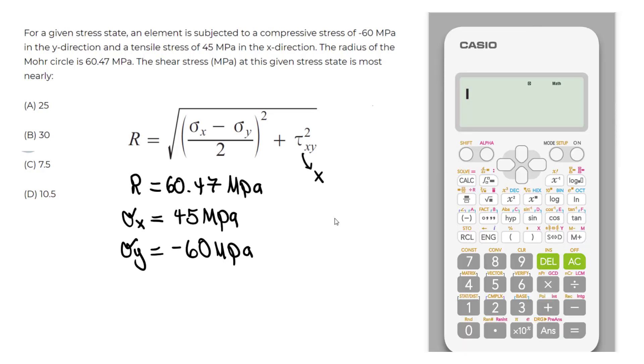So now we will solve for the unknown tau xy or unknown variable x by using the Casio FX115. So we will use this expression and make sure to plug in the appropriate values for R, sigma x, and sigma y.